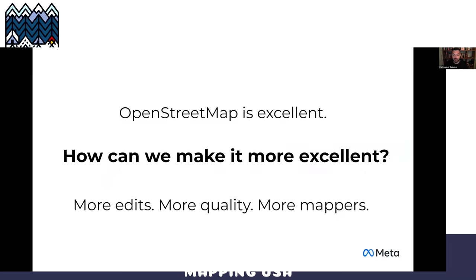Coming to OpenStreetMap itself, the reason Meta is very interested in it is because it's excellent — an incredible map that is up to date, constantly changing, and has local knowledge from all over. So we ask how we can make it more excellent: with more edits, improving quality, and enabling more people to be mappers. Anything we can do — building tools, making UX and UI easier — that enables people, that's our goal.